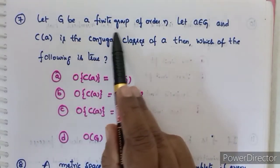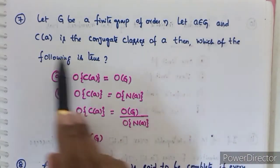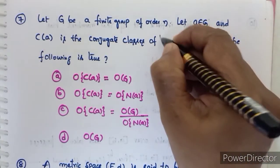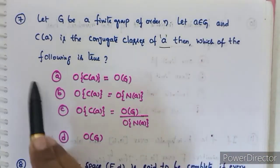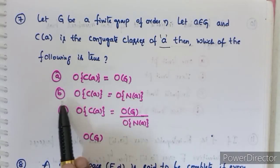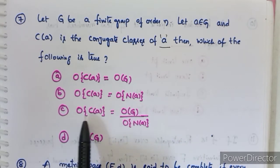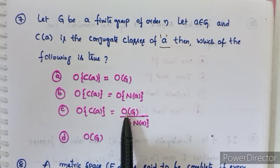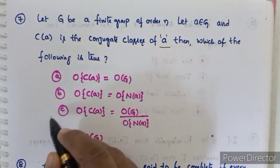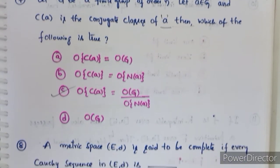Seventh question: let G be a finite group of order N. Let A belong to G and C(A) be the conjugate class of A, and N(A) be the normalizer of A. Which is true? Option C is correct: the order of C(A) equals the order of G divided by the order of N(A).